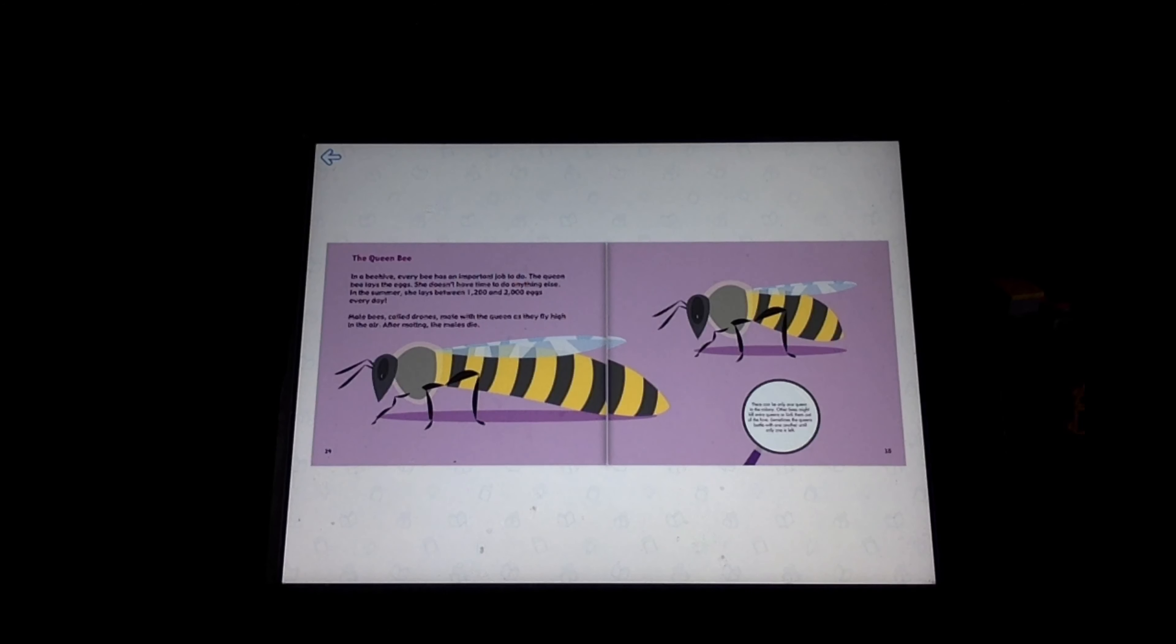Male bees, called drones, mate with the queen as they fly high in the air. After mating, the males die.